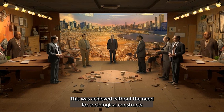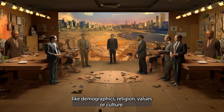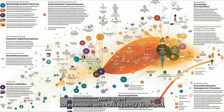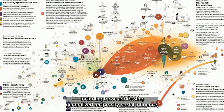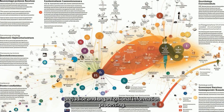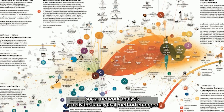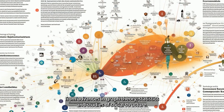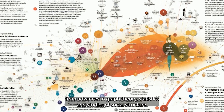This was achieved without the need for sociological constructs like demographics, religion, values, or culture. Multi-agent-based models were subsequently developed, including those addressing generalized reciprocity, social influence, prejudice, and organizational information processing. Social network analysis as a distinct analytical method emerged from advances in graph theory, statistics, and studies of social structure.